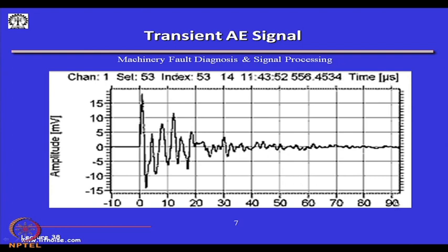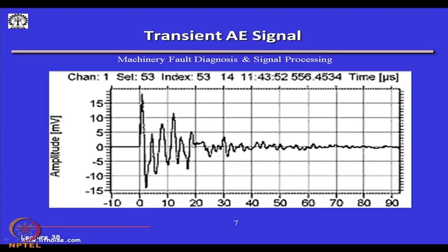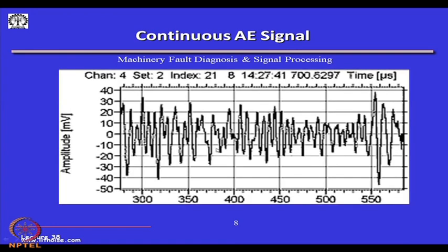This has to be captured on a device such as a digital storage oscilloscope. From this time-domain signal, certain features could be found out: number of peaks beyond a certain threshold, number of peaks occurring in a time period — all this could be done through a simple analog processor. As opposed to the transient burst signal, a continuous AE signal shows some sort of energy in a particular time waveform.